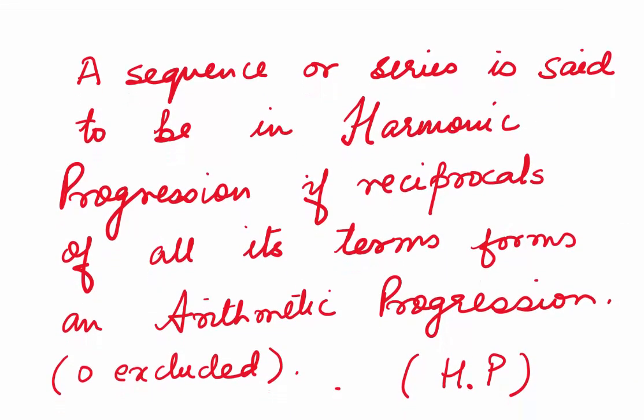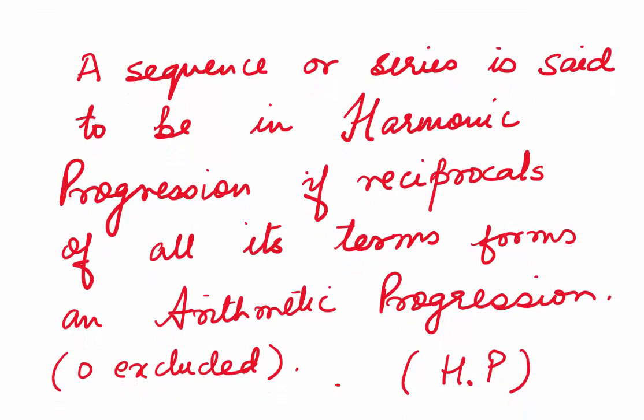Now what is a harmonic progression? A sequence or series is said to be in harmonic progression if the reciprocals of all its terms form an arithmetic progression. Remember, 0 is excluded. We write it in short as HP.